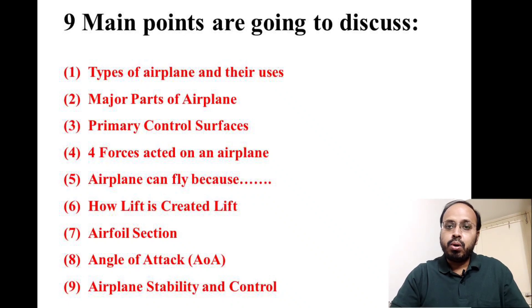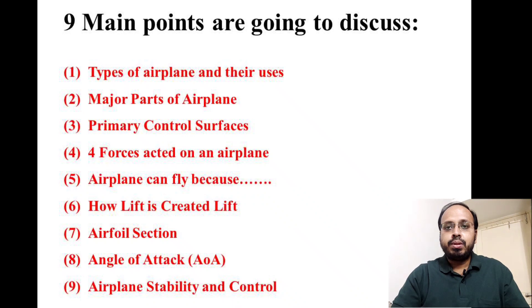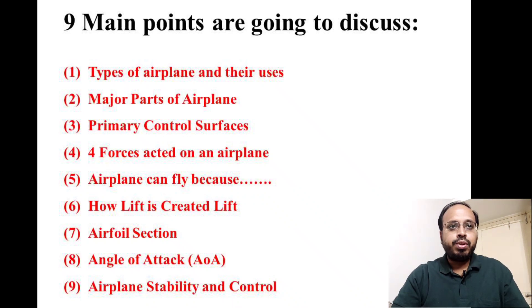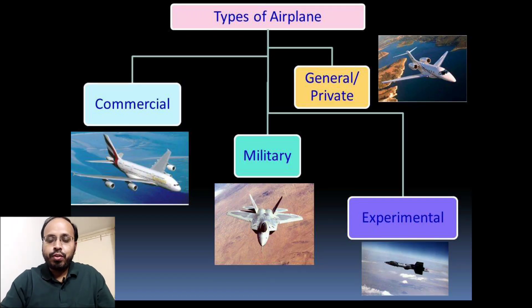So this is an overview of the nine main points we are going to see — not in detail, but only the overview of this topic in the subject of basic aircraft. Let's start with the first point: types of airplane.